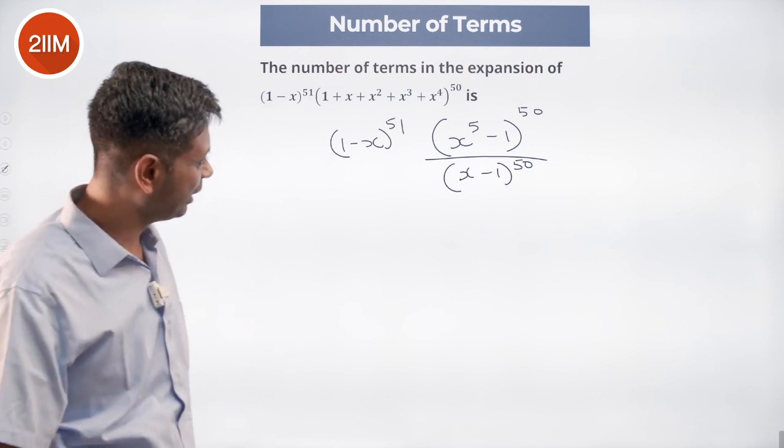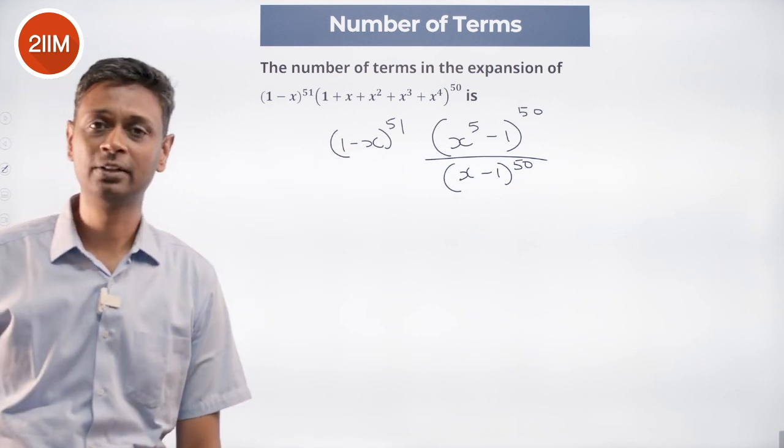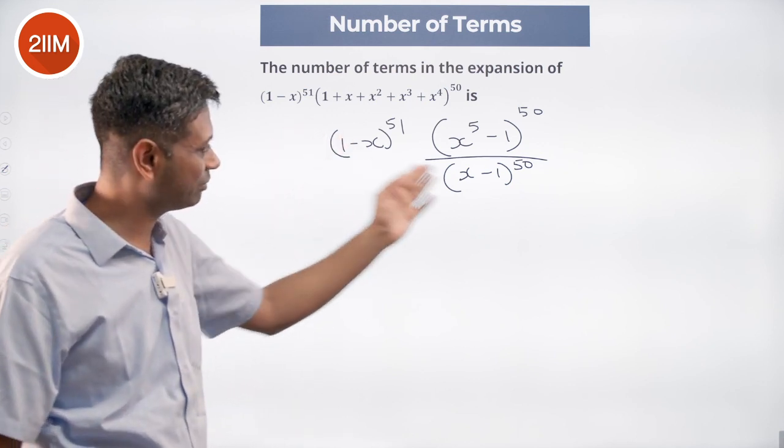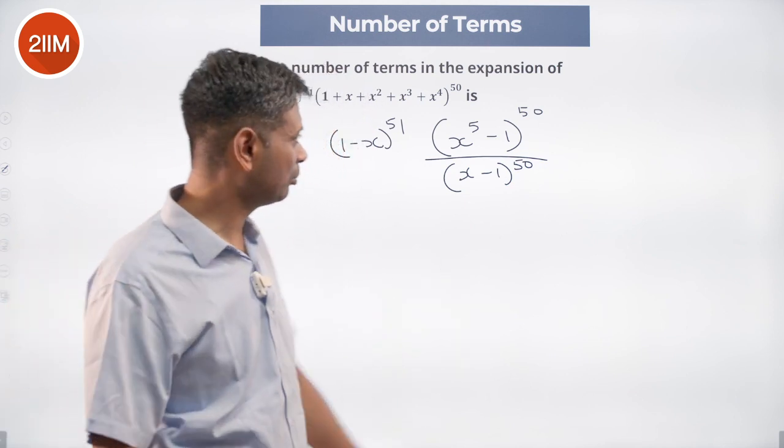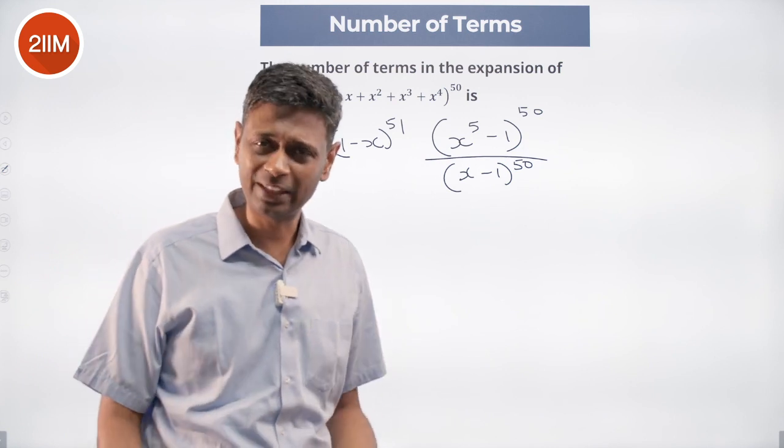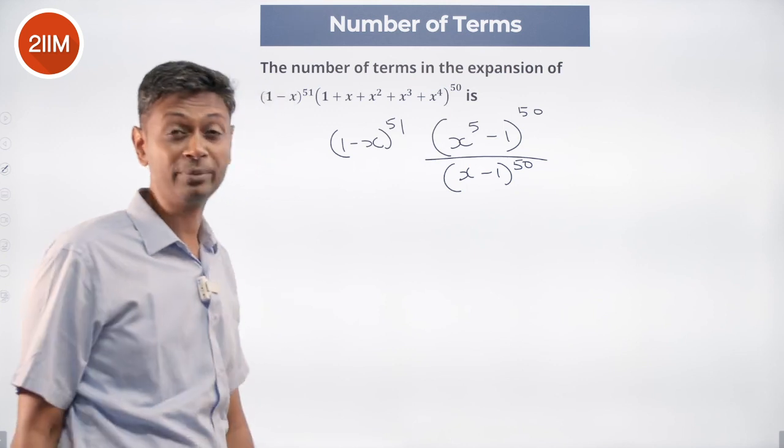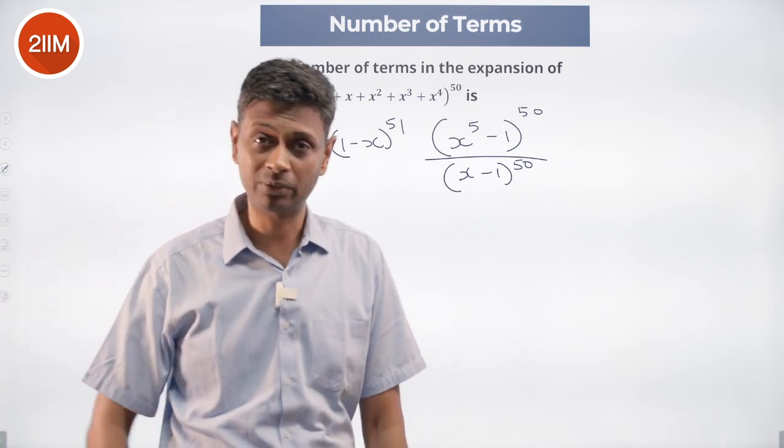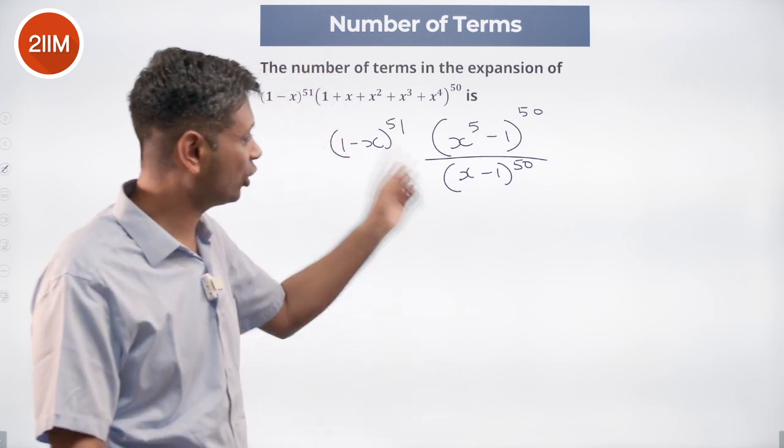Brilliant. x minus 1 power 50, 1 minus x power 51, you got it as x minus 1 power 50. 1 minus x power 50 will get cancelled completely. Or we can write this 1 minus x power 5 whole power 50, either way is fine. So I am going to cancel off x minus 1 whole power 50. x minus 1 whole power 50 and 1 minus x power 50 are same, power 50 plus or minus, it does not matter. I can knock that off completely.